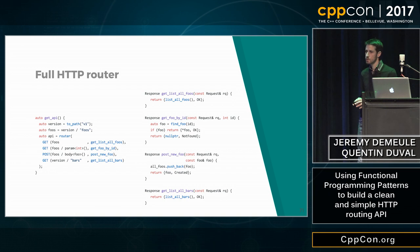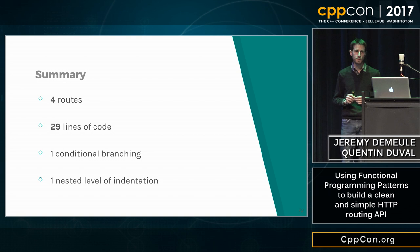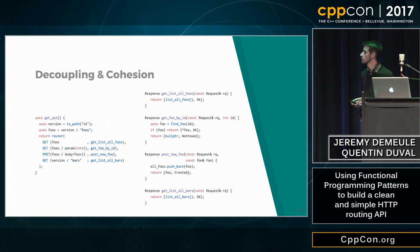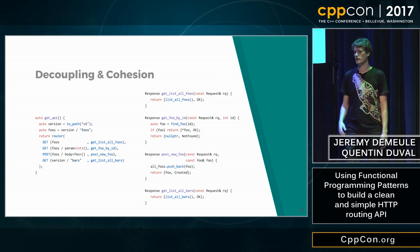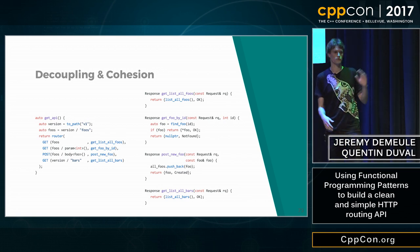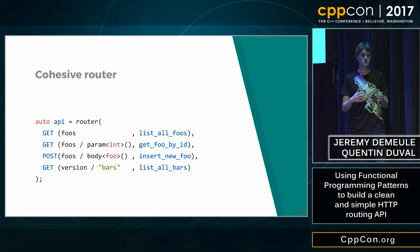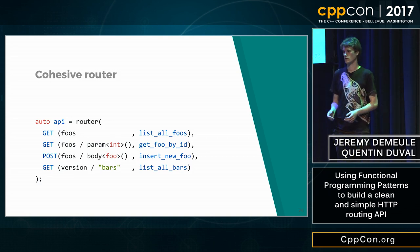Now we have defined the concepts and the APIs. We can take a look at the result and some benefits we get from this usage. We translated the four requests, and here is the full resulting code. Let's start with some numbers: we have four routes, 29 lines of code, which is quite similar, but it seems more scalable in this case. The cyclomatic complexity is very low — one. And we think we are at a good level of abstraction. If we look at the shape of the code, it's split in two: the left part is the router, and the right part is all the handlers. If we zoom on the router, it's concise, pretty readable, and defines all the routes inside our server. This is how we get the cohesion.